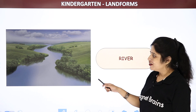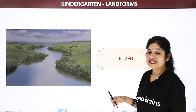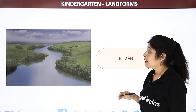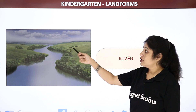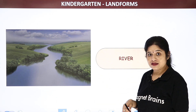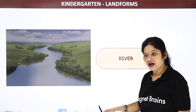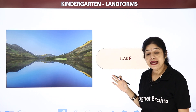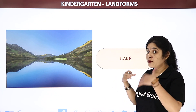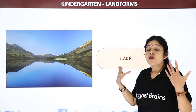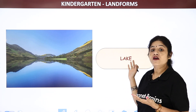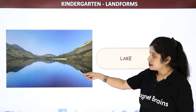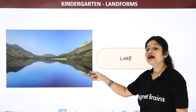Now let us see a beautiful river. It is a water body and it is also a type of landform. Many people used to stay near the rivers. This is a river. Now it is a lake — it means it is bigger than a river and it is having more water than a river. The bigger water body is known as a lake.